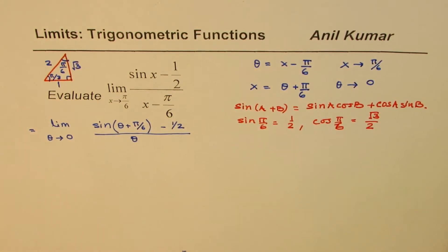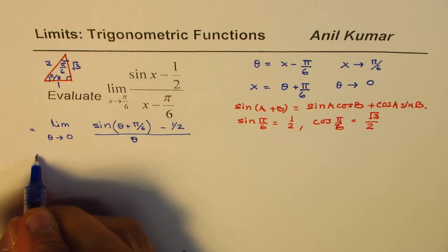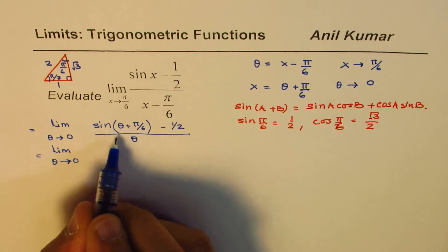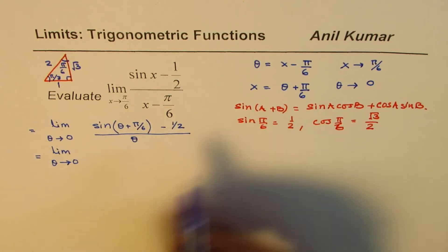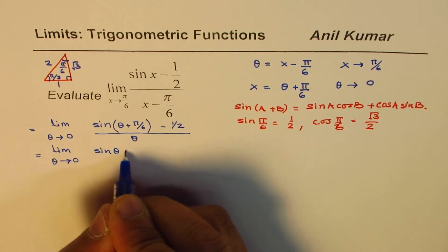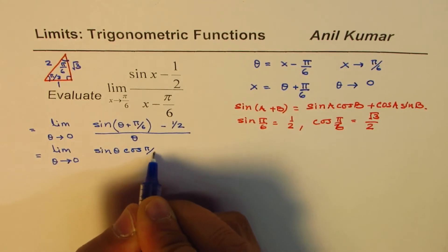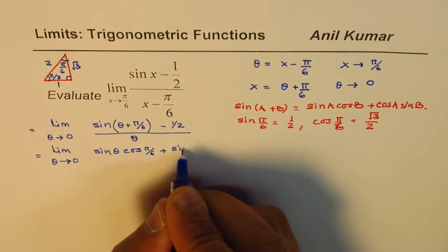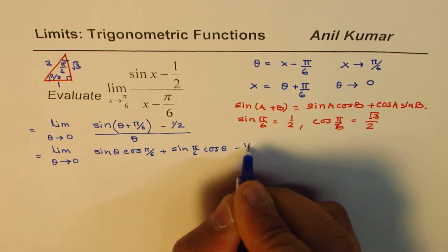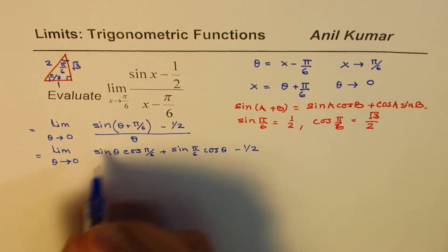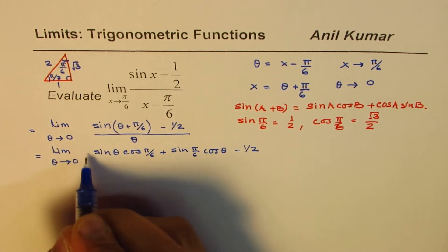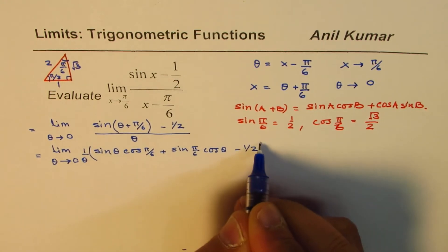Expanding sin(θ + π/6) using the compound angle formula, we get: sin θ · cos(π/6) + sin(π/6) · cos θ. So the limit becomes: limit as θ → 0 of [sin θ · cos(π/6) + sin(π/6) · cos θ - 1/2] divided by θ.